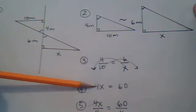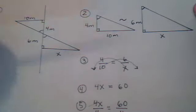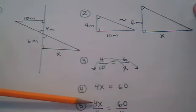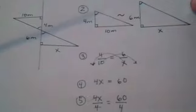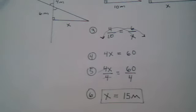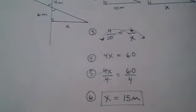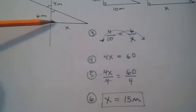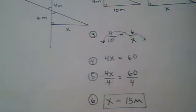X times 4 is 4X. 10 times 6 is 60. Solve for your X. So the length of the pond here is 15 meters.